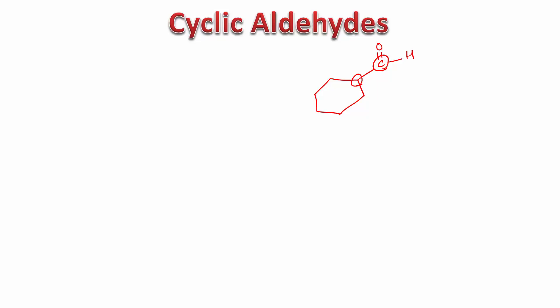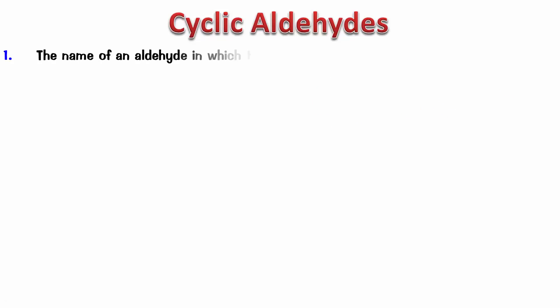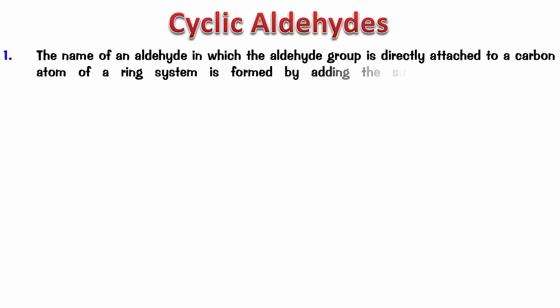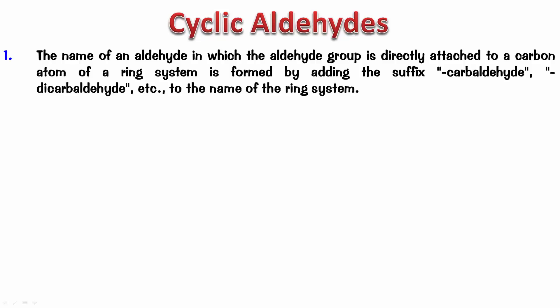So how do we name this? In such a case, the basic logic of naming becomes 'cycloalkane carbaldehyde' — whenever we do not include the CHO in the parent and yet it is the principal functional group, we call it carbaldehyde. The name of an aldehyde in which the aldehyde group is directly attached to a carbon atom of a ring system is formed by adding the suffix 'carbaldehyde' or 'dicarbaldehyde', depending upon how many CHOs you have, to the name of the ring system.